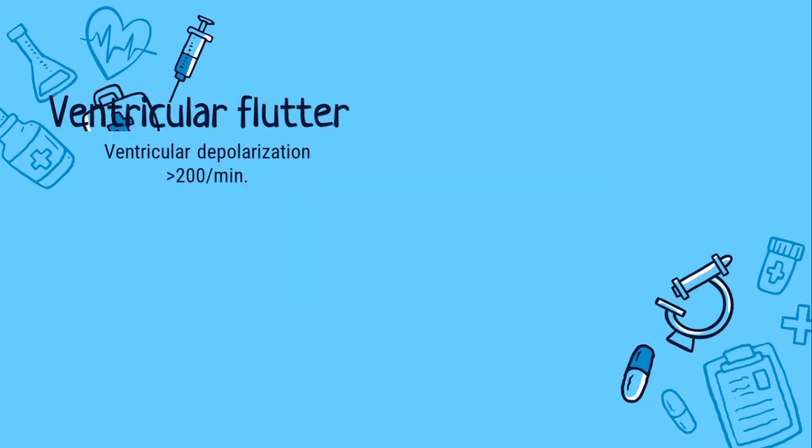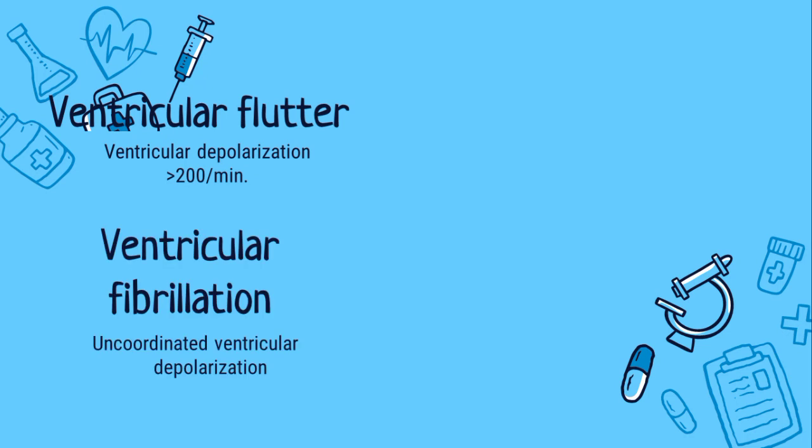Ventricular flutter is a ventricular depolarization with more than 200 beats per minute. Another one is the ventricular fibrillation, which is the uncoordinated ventricular depolarization. Both ventricular flutter and ventricular fibrillation are lethal arrhythmias characterized by chaotic disorganized electrical activity that results in failure of sequential cardiac contraction and inability to maintain cardiac output.